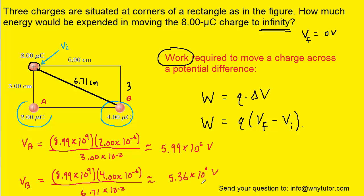We'll go ahead and process these two calculations. Here are the two electric potentials produced by the two charges. We can actually add these together to get the total potential. We don't have to worry about adding any vector components because these are not vector quantities — we simply algebraically add them. When we do that we get 1.14 times 10 to the sixth volts, and that's going to represent the initial electric potential at this point.